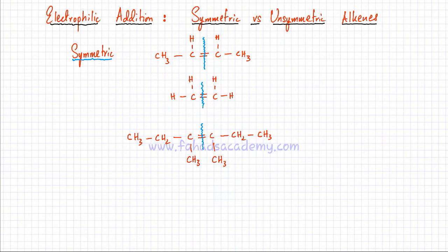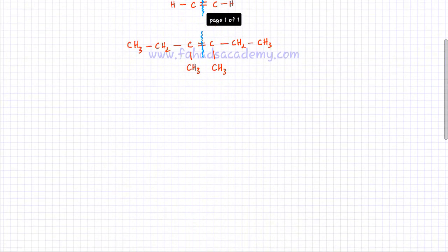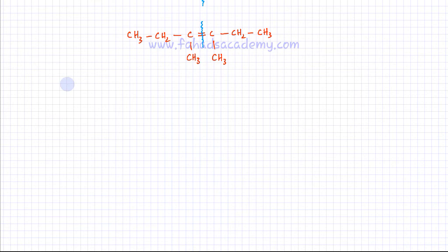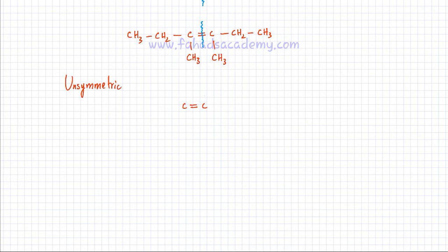Now let's discuss unsymmetric alkenes. For unsymmetric alkenes, the arrangement of atoms around the carbon double bond is going to be different. For example, with the simplest unsymmetric alkene, the arrangement of atoms around the double bond on the left hand side and the right hand side is different.